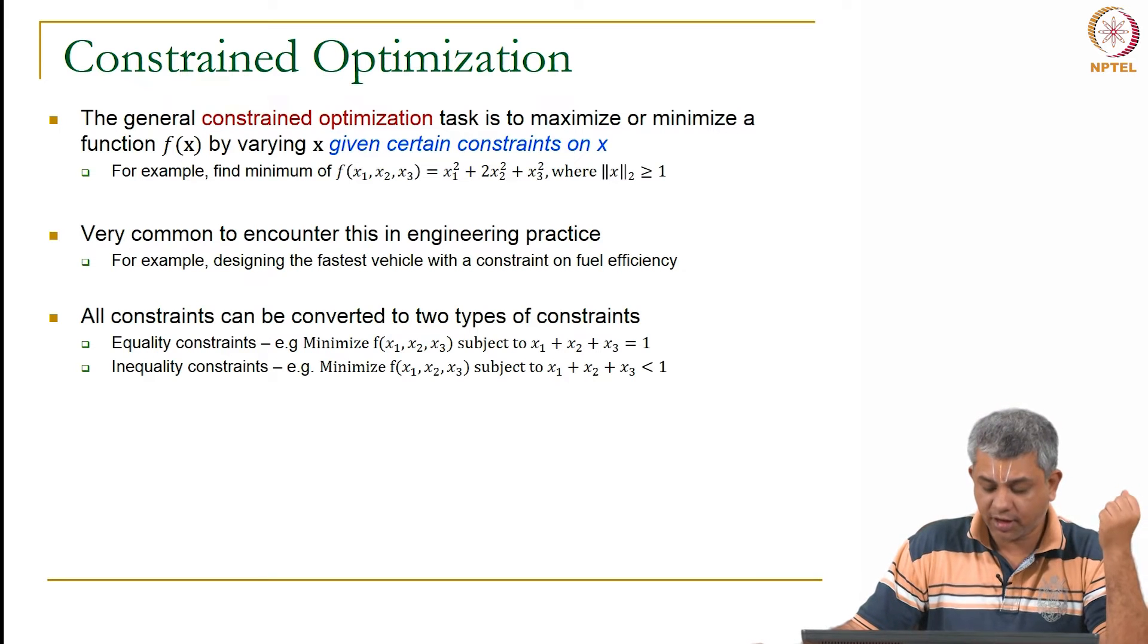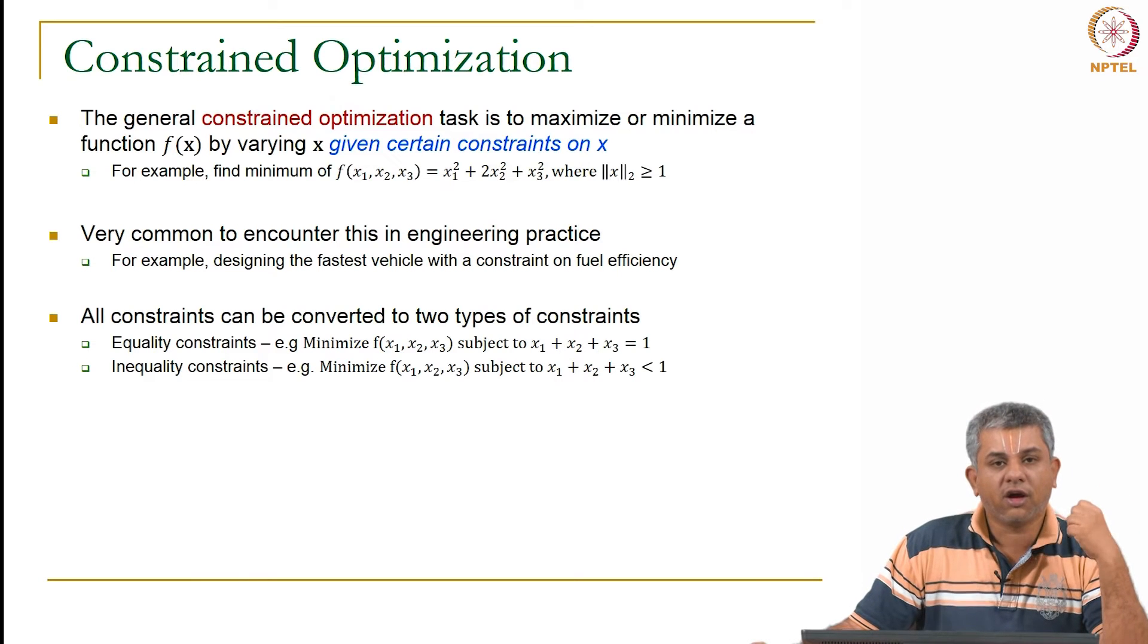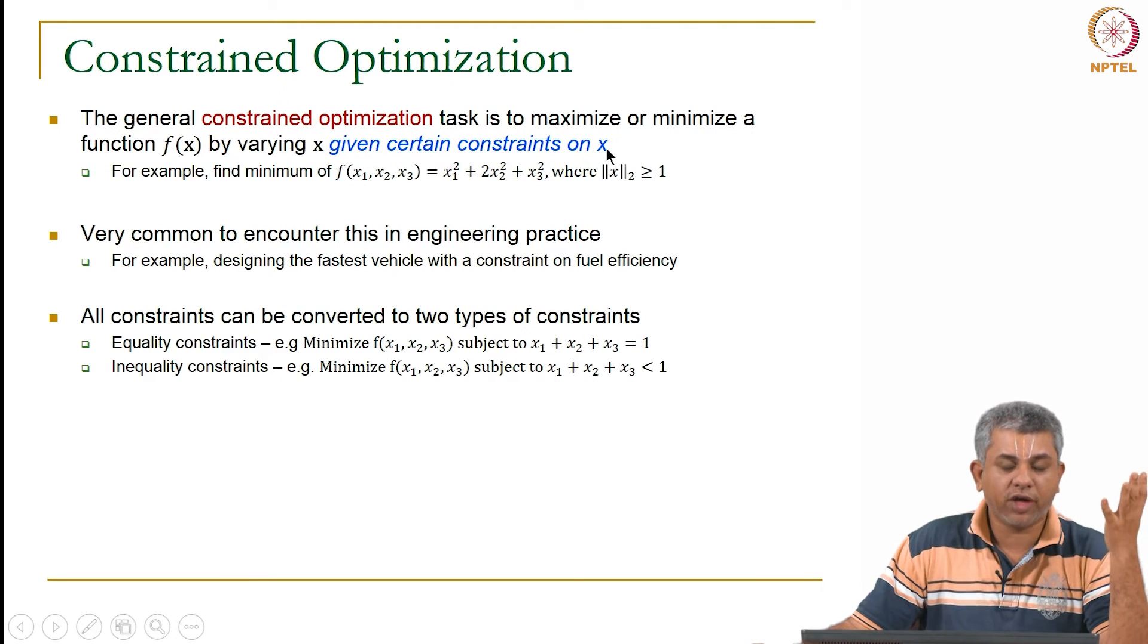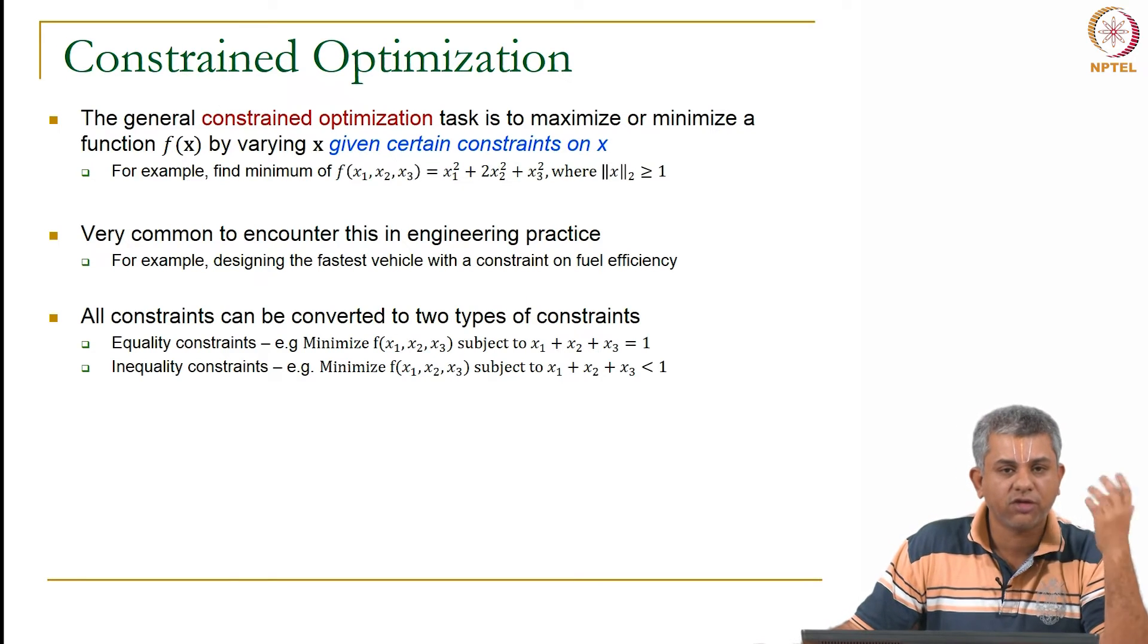Similarly, inequality constraints. Instead of giving x₁ + x₂ + x₃ equal to 1, you say x₁ + x₂ + x₃ has to be less than 1. Find out my fastest going vehicle given that fuel consumption has to be less than a given value. This would be an example of a constraint optimization with an inequality constraint.